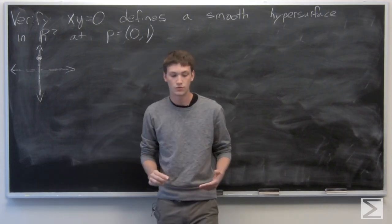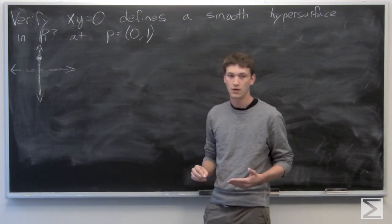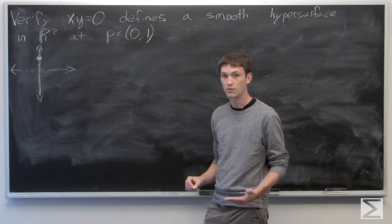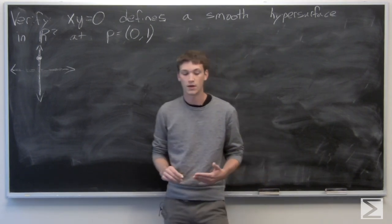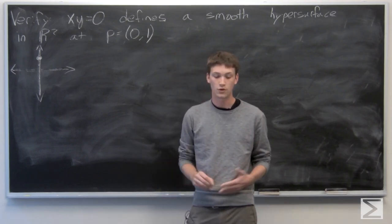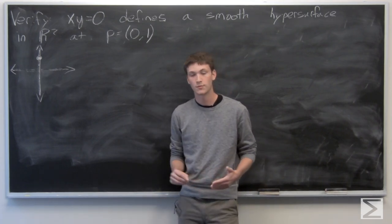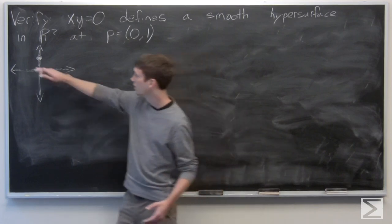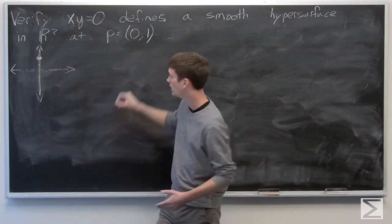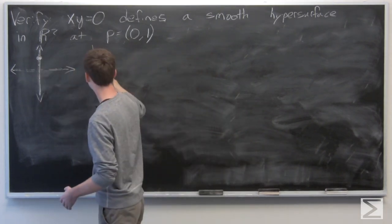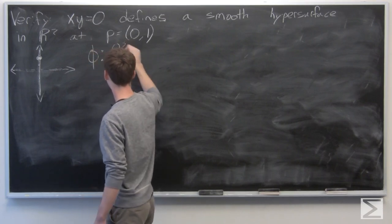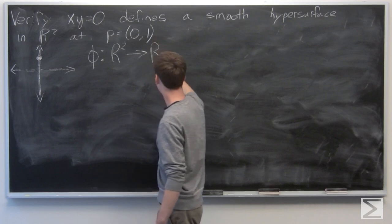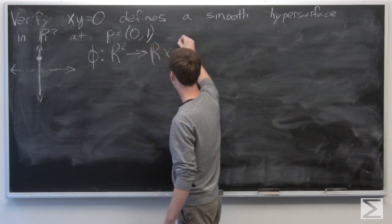So we want to first show that we can verify this if we can show that there exists a local smooth change of coordinates around p. So nearby here, if we can produce some local change of coordinates from R2 to R cross 0.